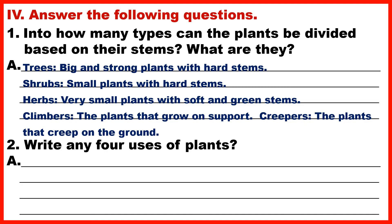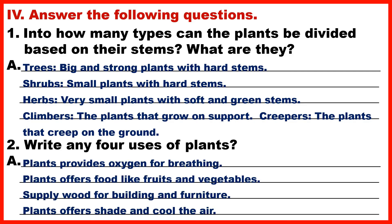Question 2: Write any 4 uses of plants. Answer: Plants provide oxygen for breathing; plants offer food like fruits and vegetables; they supply wood for building and furniture; plants offer shade and cool the air.